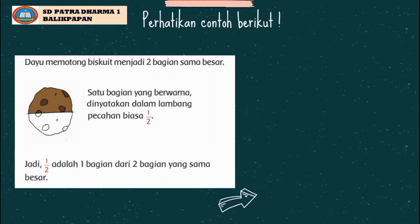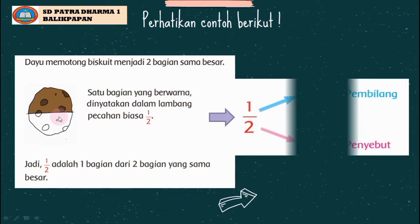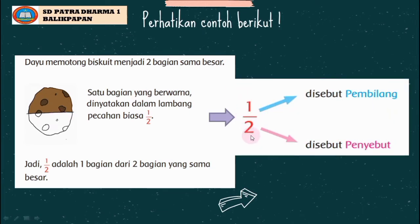Satu biskuit dipotong menjadi empat bagian sama besar dinyatakan dalam lambang pecahan biasa: satu per empat. Contoh: Dayu memotong biskuit menjadi dua bagian sama besar. Satu bagian yang berwarna dinyatakan dalam lambang pecahan biasa yaitu 1/2. Jadi 1/2 adalah satu bagian dari dua bagian yang sama besar. Pada pecahan 1/2, angka 1 di atas disebut pembilang dan angka 2 di bawah disebut penyebut.